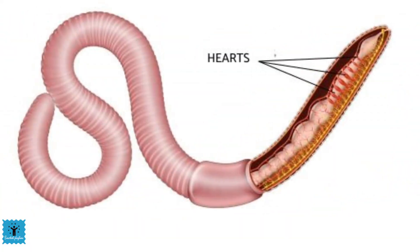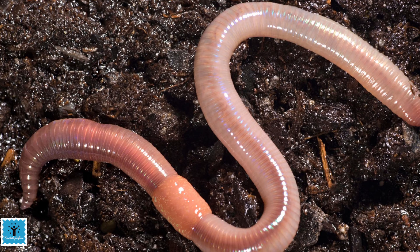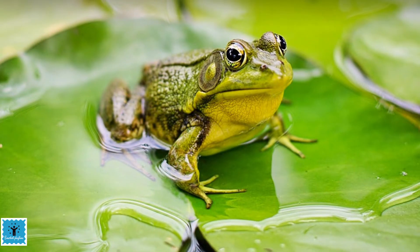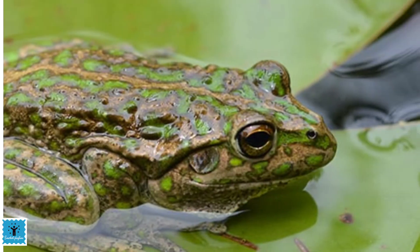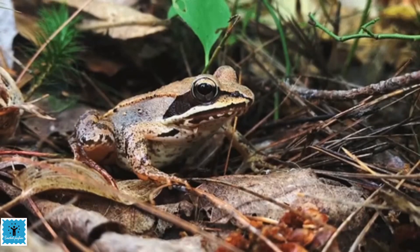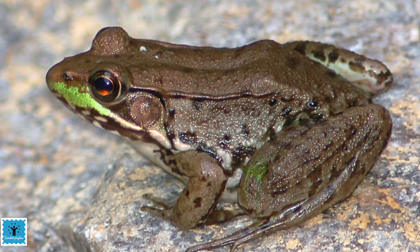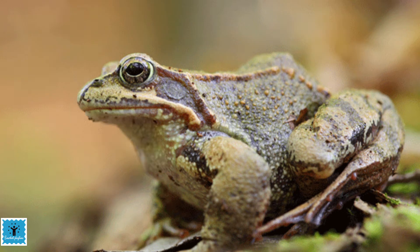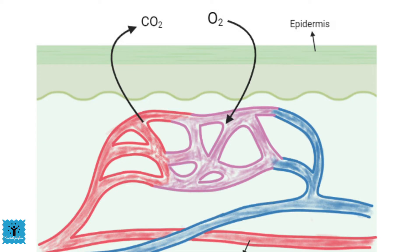Earthworms have five heart-like structures that help pump oxygenated blood to their head. Breathing through skin is also a common characteristic in amphibians. Frogs, for example, have a pair of lungs like human beings, but can also breathe through their skin. Frog skin is thin, moist, and slimy with many blood vessels — oxygen diffuses in and carbon dioxide escapes through those vessels.